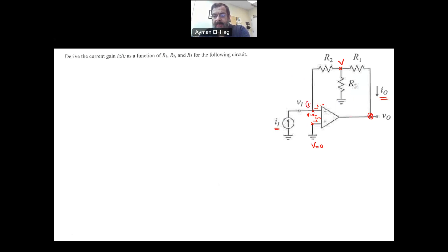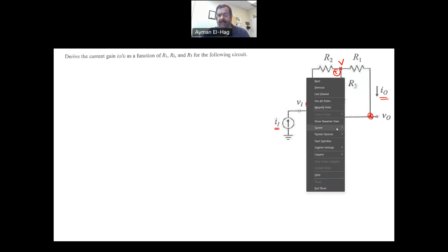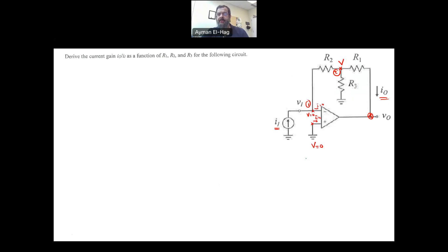We have node number one and node number two. These are the two nodes I will be applying KCL to. I usually assume the currents are leaving, except if you are given a current source with a certain direction. The current that goes here is I_in. Because no current is going inside the op-amp, the whole current will be going there, so this is also I_in.